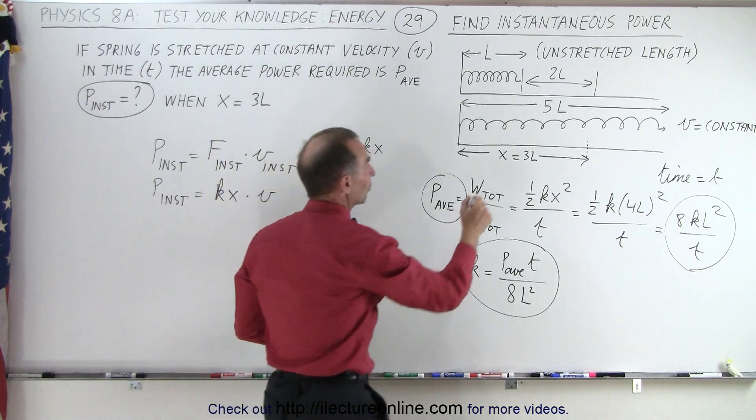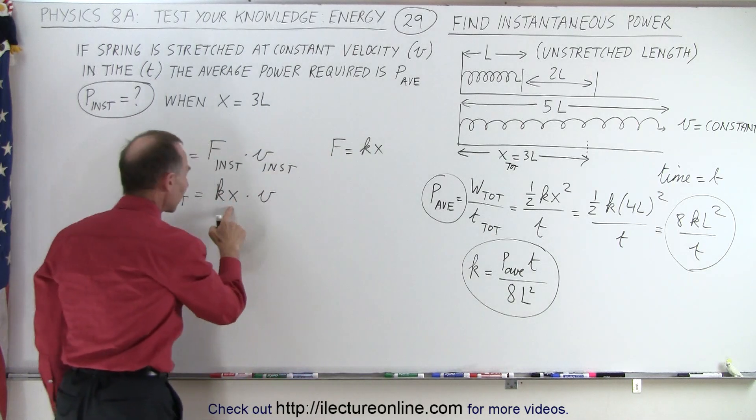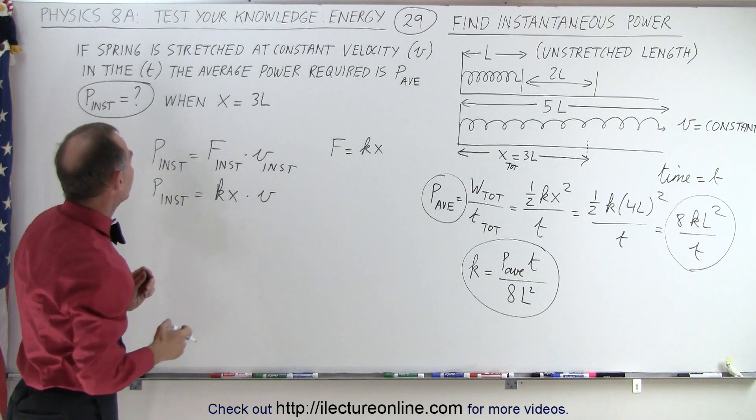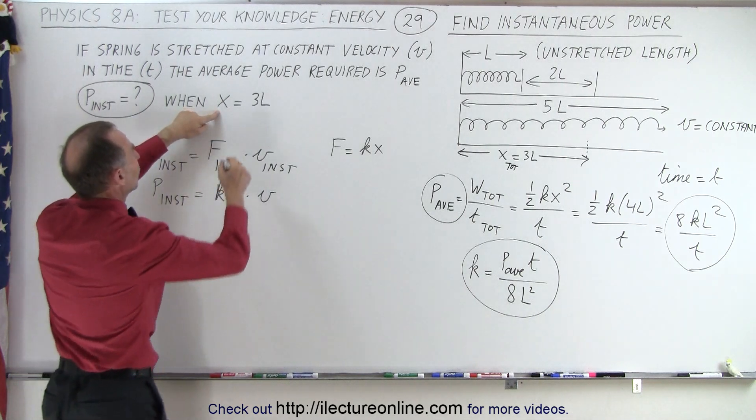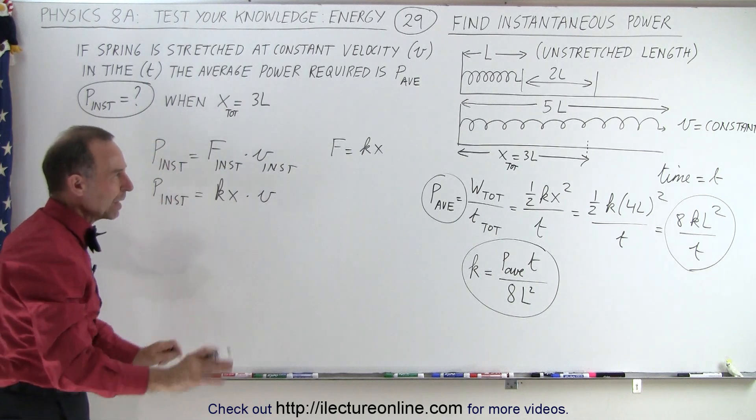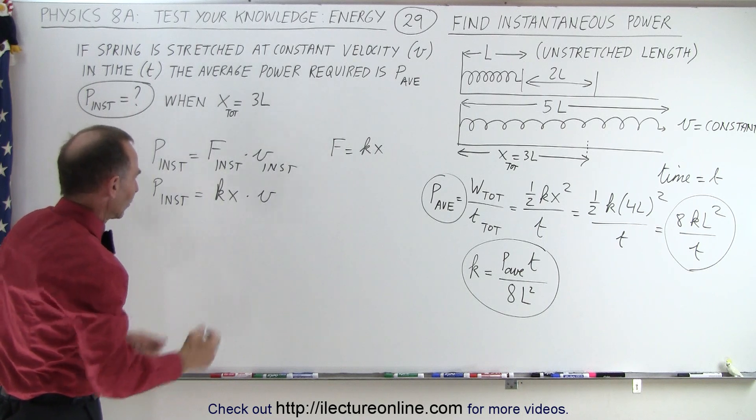That's the total length. So this would be X total is equal to 3L, but X is only equal to 2L, because it's the length plus an additional 2L. So here, I should say X total equals to 3L. So we make a distinction there. And X is just a general variable X.